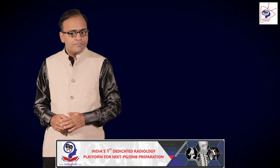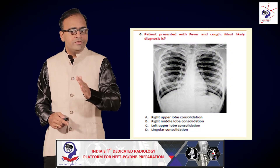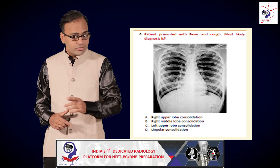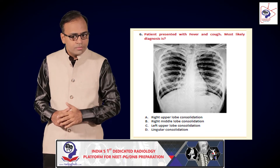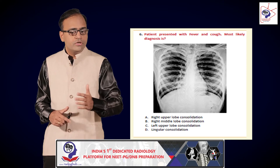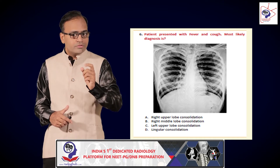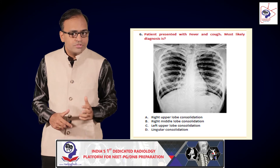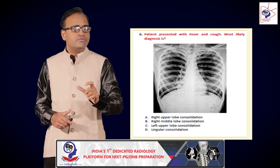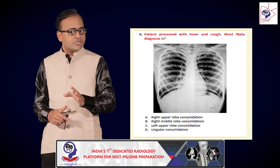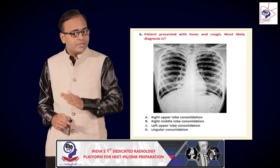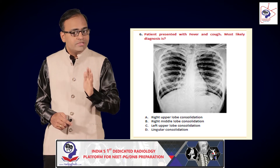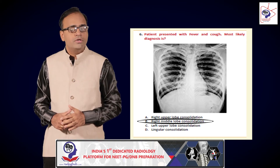Now let us look at image-based questions from the first chapter. A patient presented with fever and cough — this was a recently asked exam question: what is the diagnosis — right upper lobe consolidation, right middle lobe consolidation, left upper lobe consolidation, or lingular consolidation? The characteristic finding here is a small area of haziness in the right paracardiac area causing obscuration or blurring of the right heart border. The lobe located in the right paracardiac area is the right middle lobe, so the answer is right middle lobe consolidation.